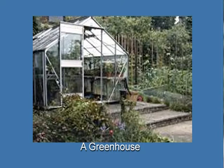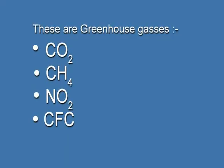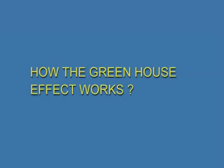There is an IPCC report — the Intergovernmental Panel on Climate Change report — which states that there is a trend of increase in the concentration of greenhouse gases since pre-industrial times. The greenhouse gases include carbon dioxide, methane, nitrogen peroxide, and chlorofluorocarbon. Now let us see how the greenhouse effect actually works and how it is produced.